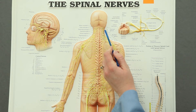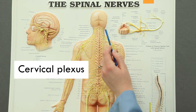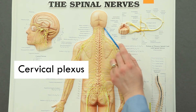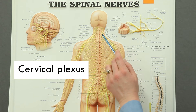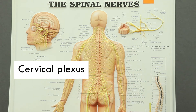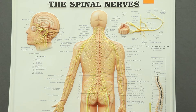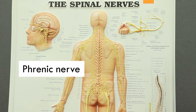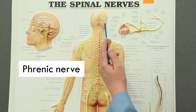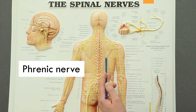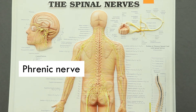Up here at the top, we have the cervical plexus, which takes axons from levels C1 to C4 of the spinal cord, sometimes a little bit from C5. The most important nerve that comes off of the cervical plexus is the phrenic nerve. We don't see it on this diagram because we are looking at the posterior, but the phrenic nerve will come straight down and innervate the diaphragm, which is that large muscle that helps you to breathe.